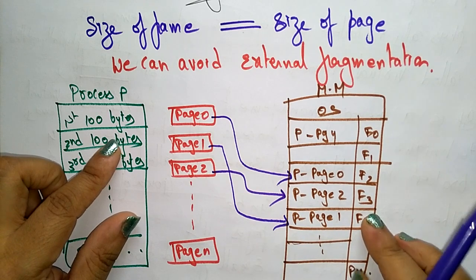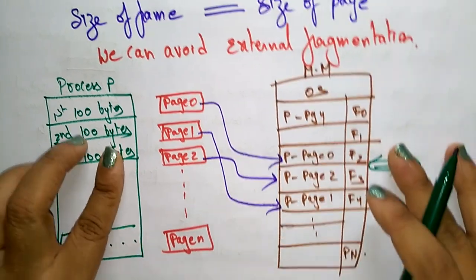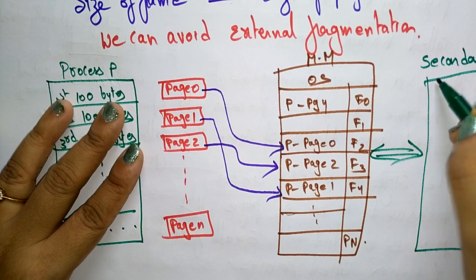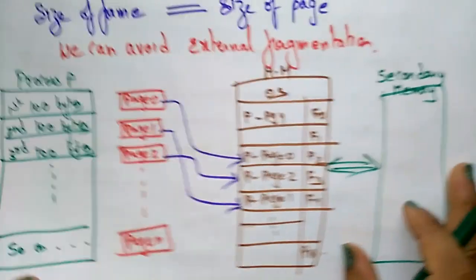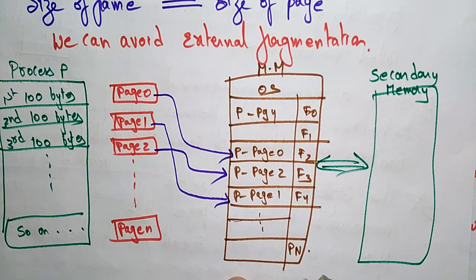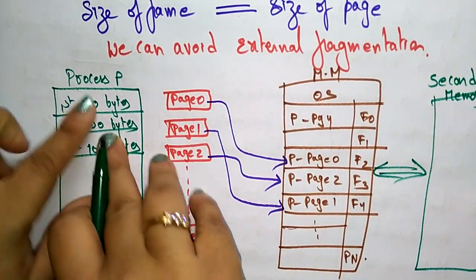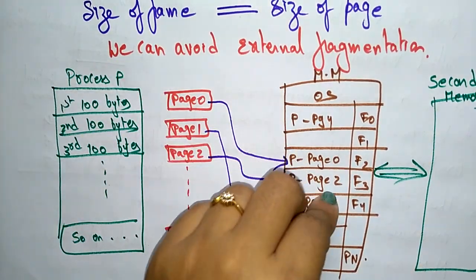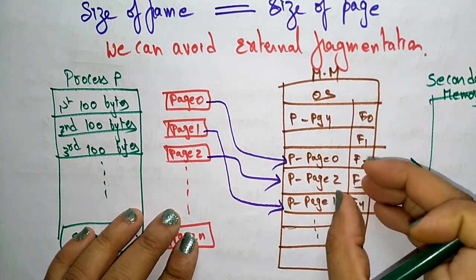Whenever an operation is over and you want to free main memory, you can swap the data into secondary memory. Secondary memory holds data not used frequently. Whenever the process is needed again, you can swap it back to main memory when space is available. So a process is divided into pages, pages are stored in main memory as frames, and those frames are accessed as needed.